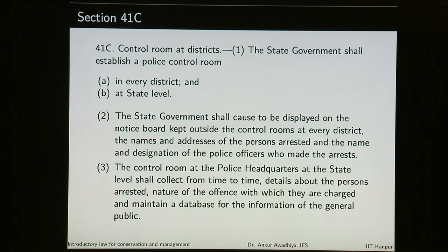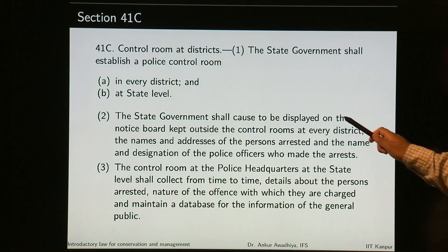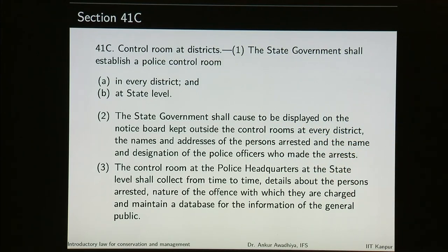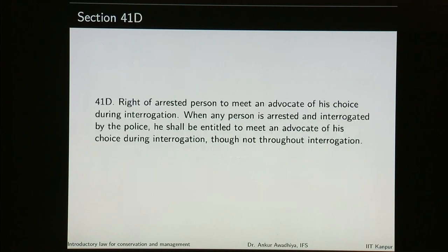The state government shall establish a police control room in every district and at state level. The state government shall cause to be displayed on the notice board kept outside the control rooms at every district the names and addresses of the persons arrested and the name and designation of the police officers who made the arrest. So if somebody is not being found and there is a suspicion that that person may have been arrested, people should be able to go to these control rooms and check the notice board. The control room at the police headquarters at the state level shall collect details about the persons arrested and the nature of the offence with which they are charged, and maintain a database for the information of the general public. There has to be transparency in the whole process.